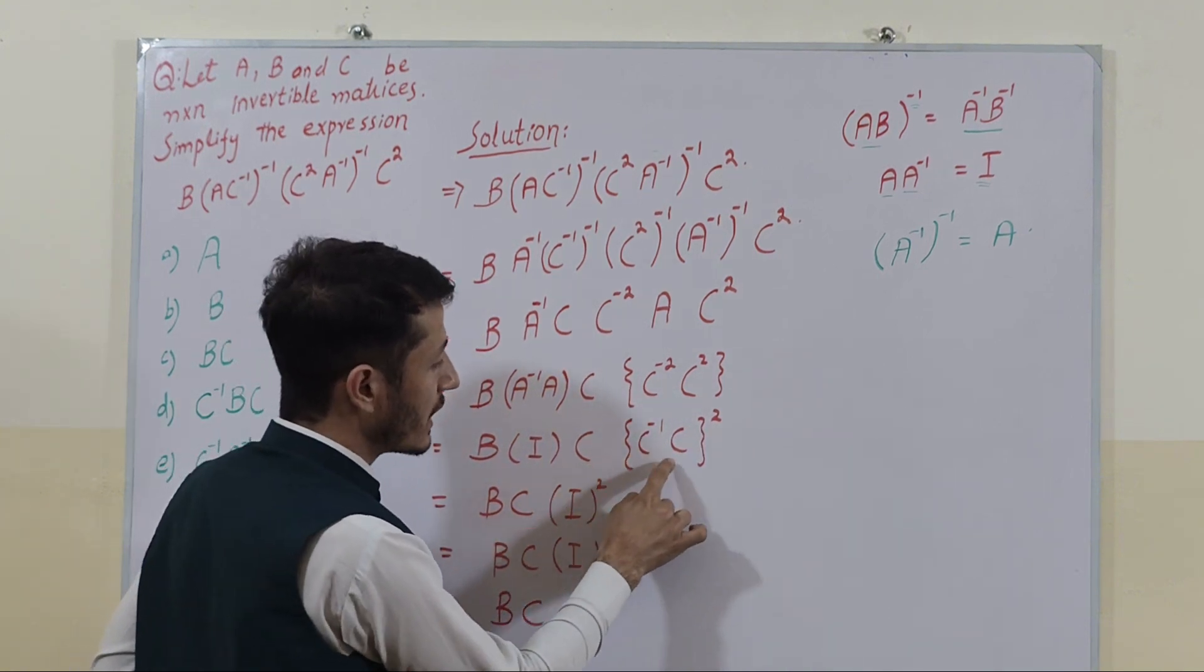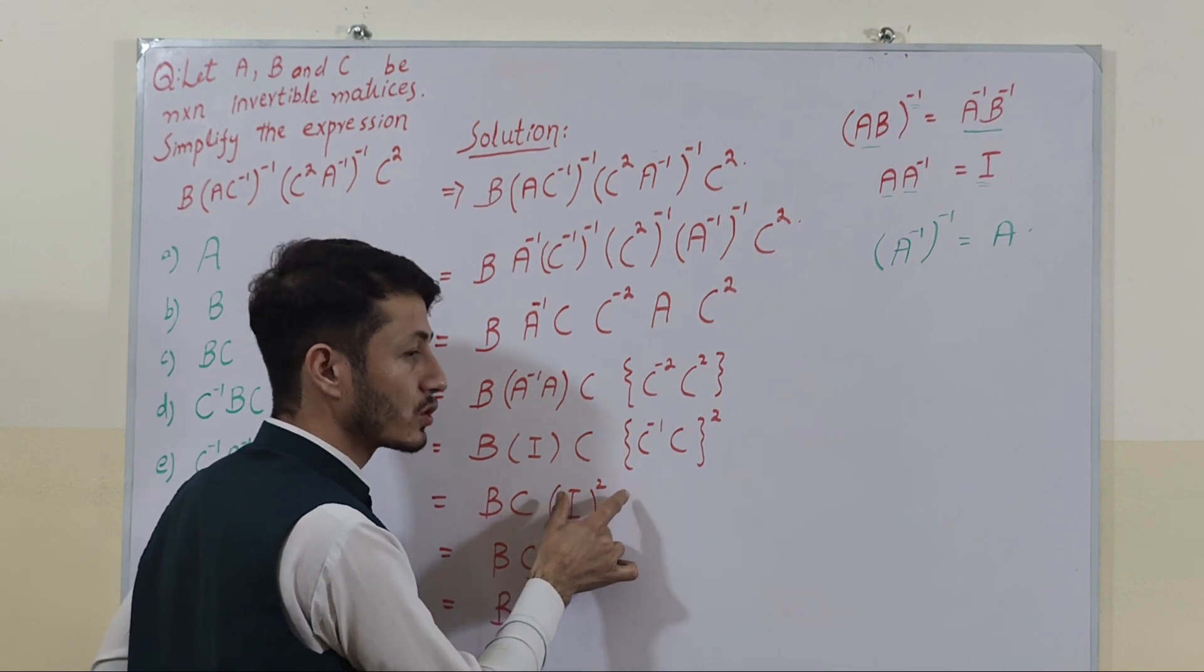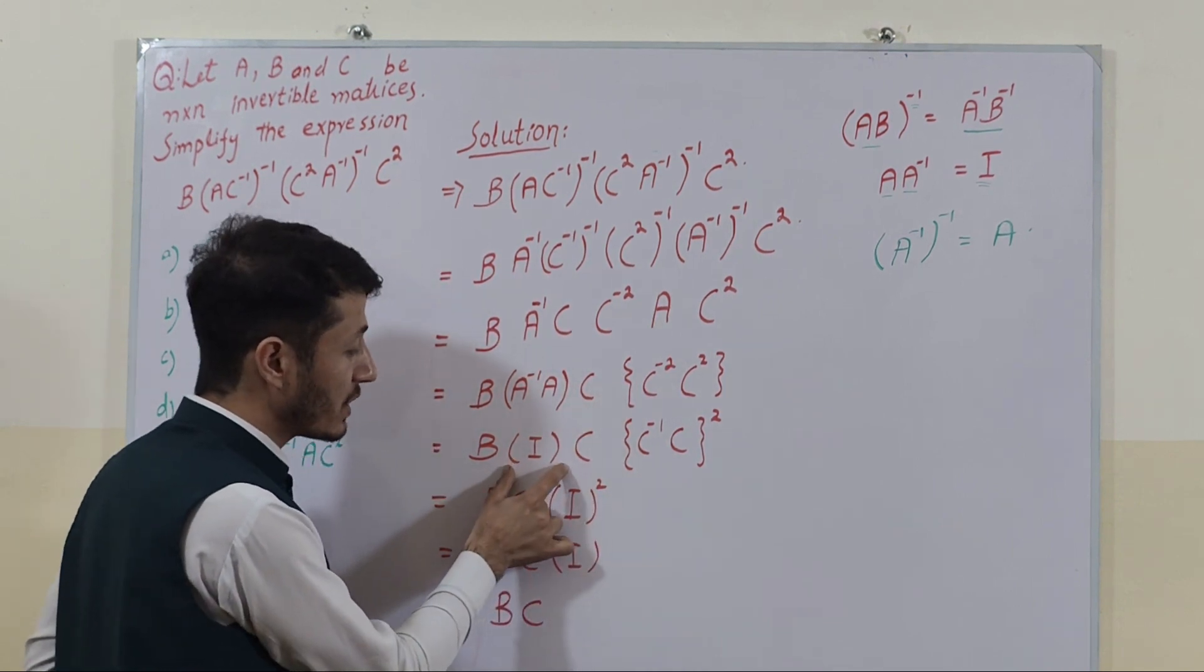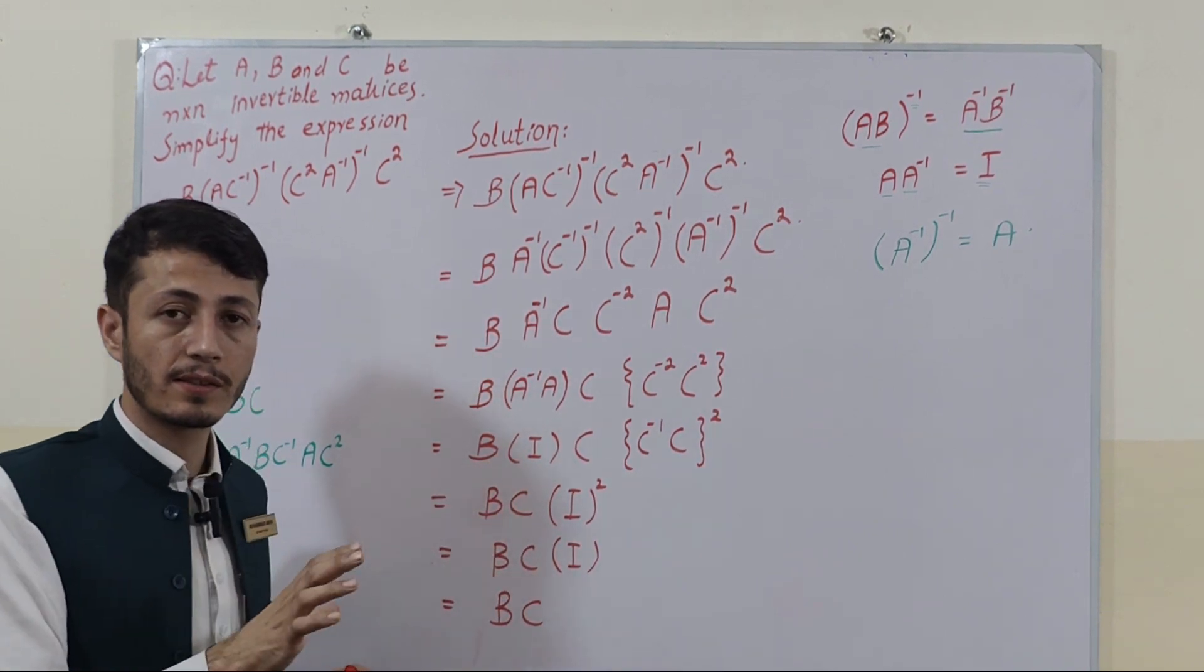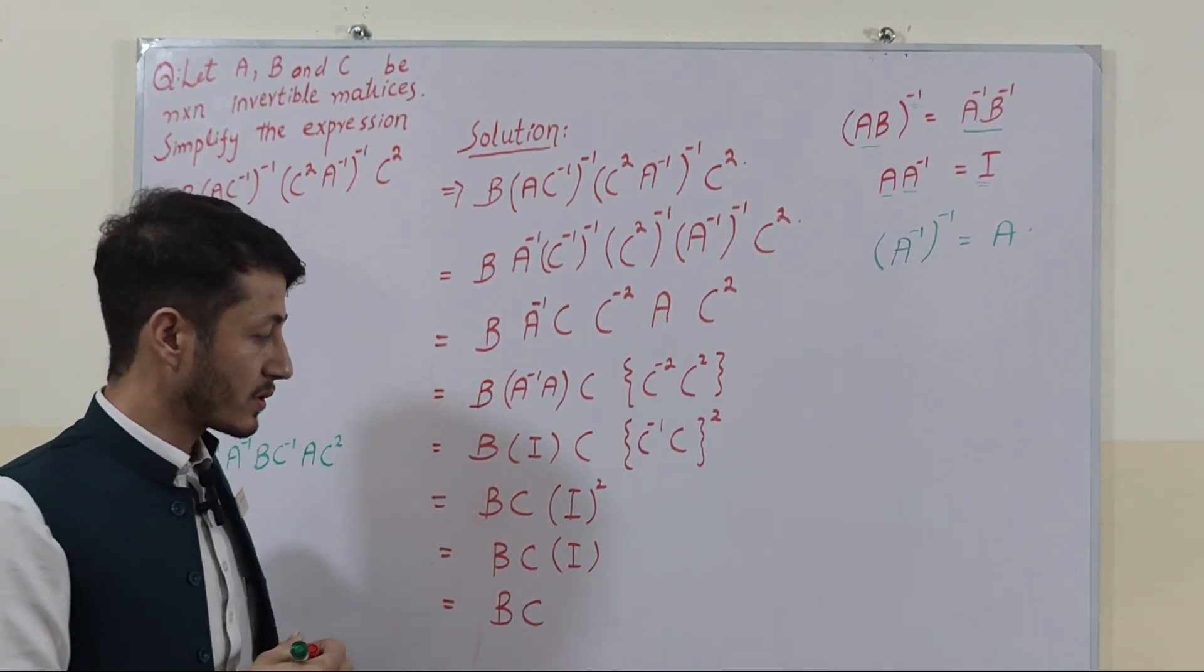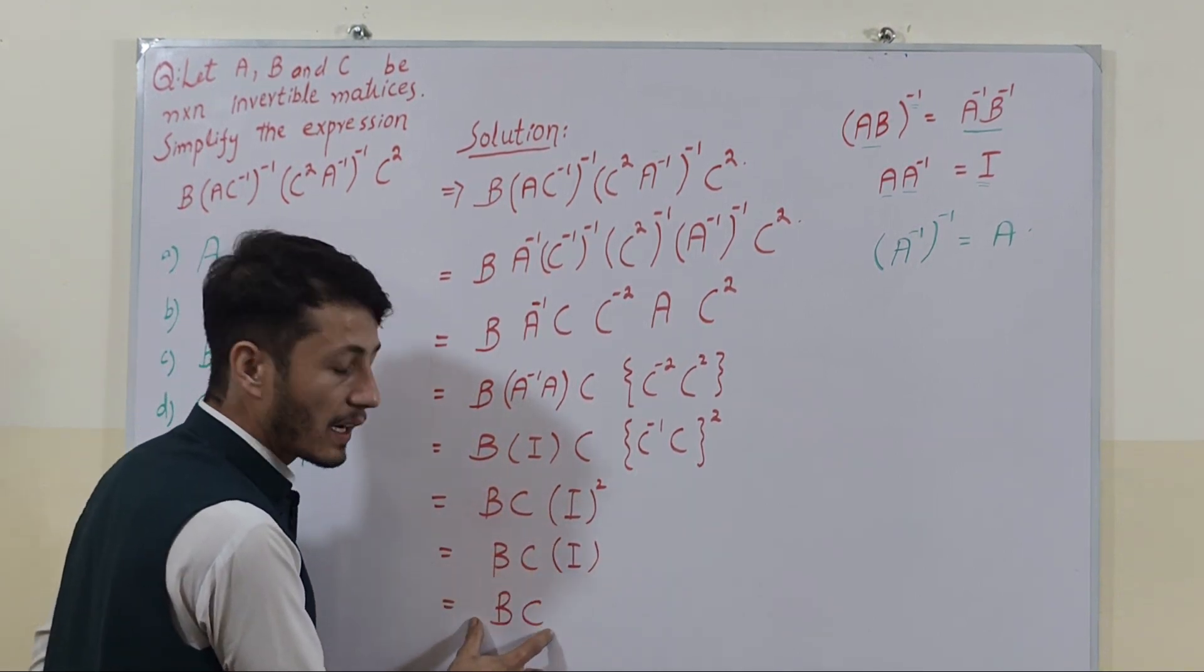Then the C inverse and C matrix gives us identity, and identity matrix square gives us identity. And when identity matrix is multiplied with a matrix, it gives us the matrix as it is. It doesn't change the matrix. So from here this is the final result.